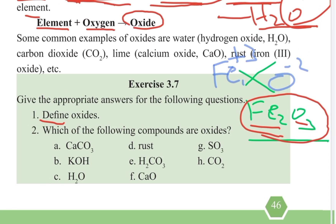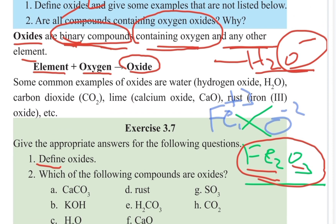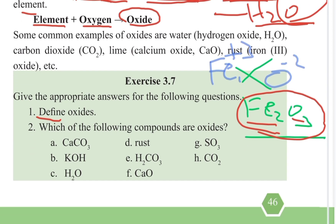The oxide is a binary compound. It contains oxygen and another element. The following compounds are oxides.